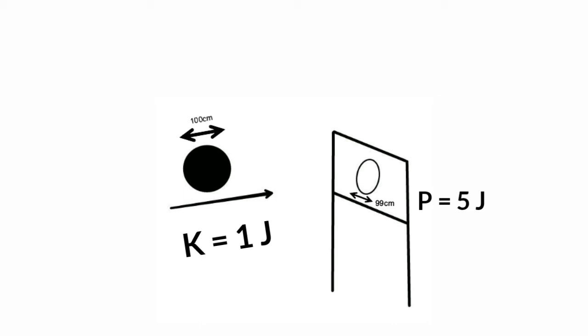It is thrown with a certain velocity so that it has a kinetic energy of 1 joule, but the potential energy needed for the ball to pass through the goal post is 5 joules.